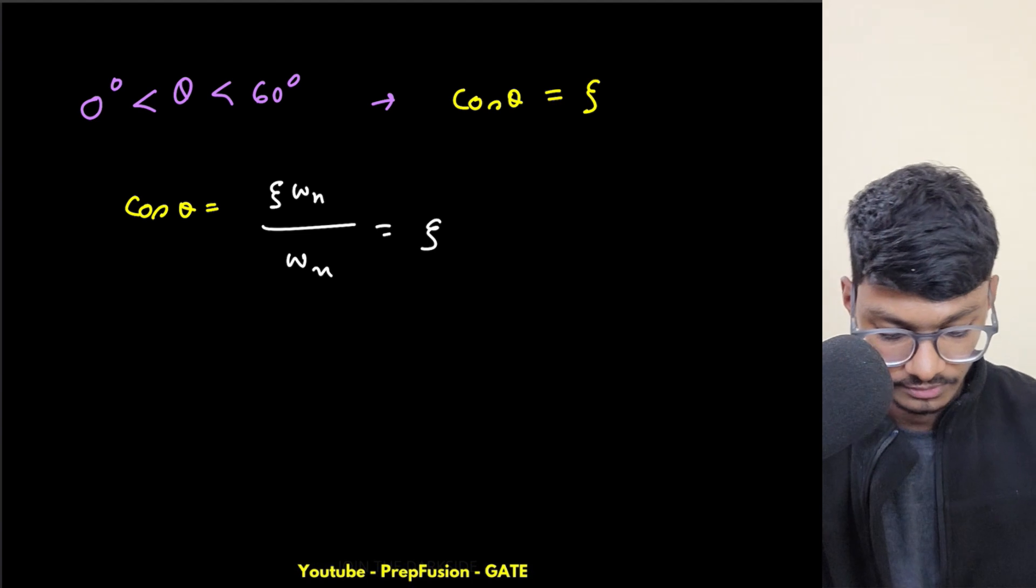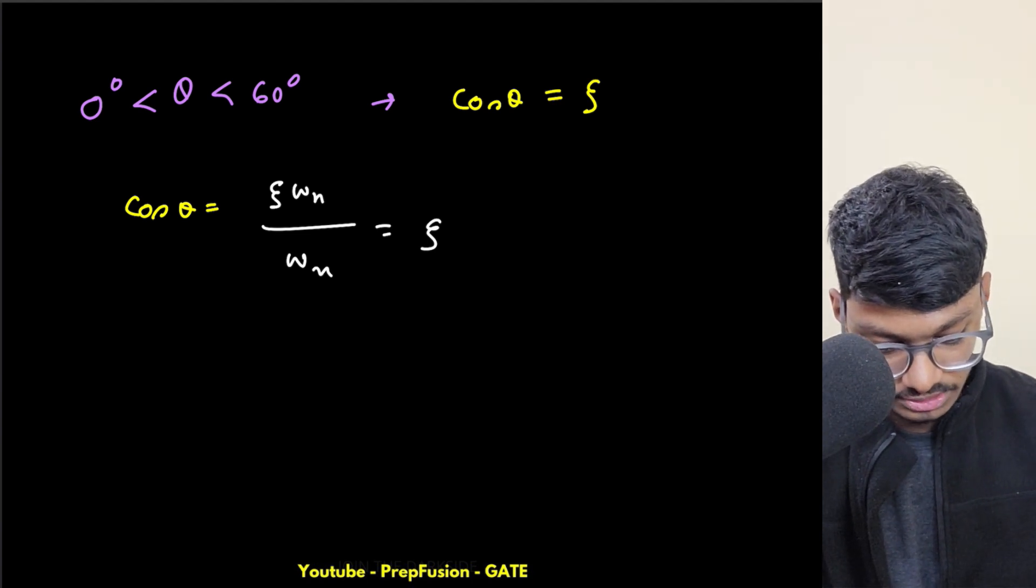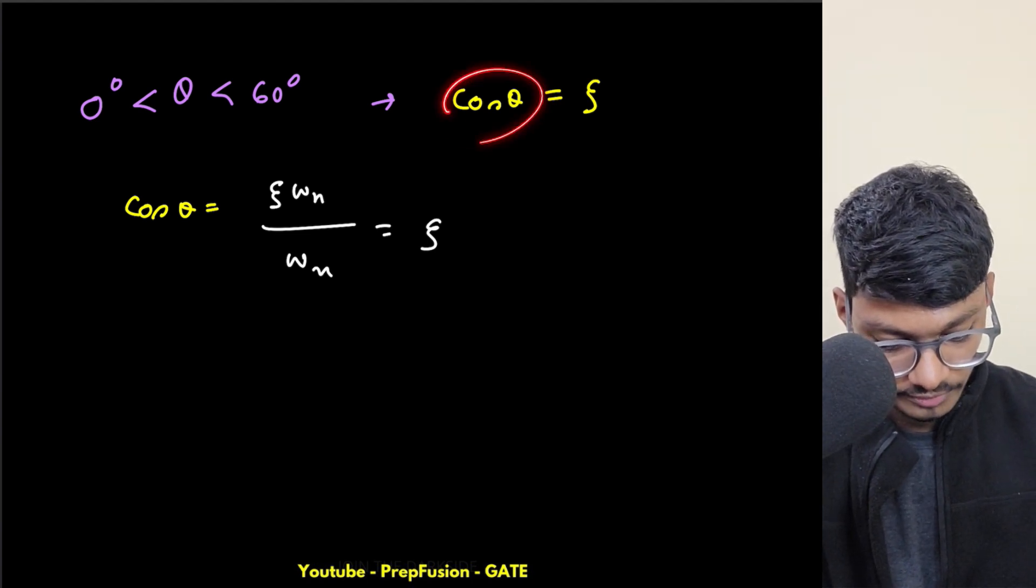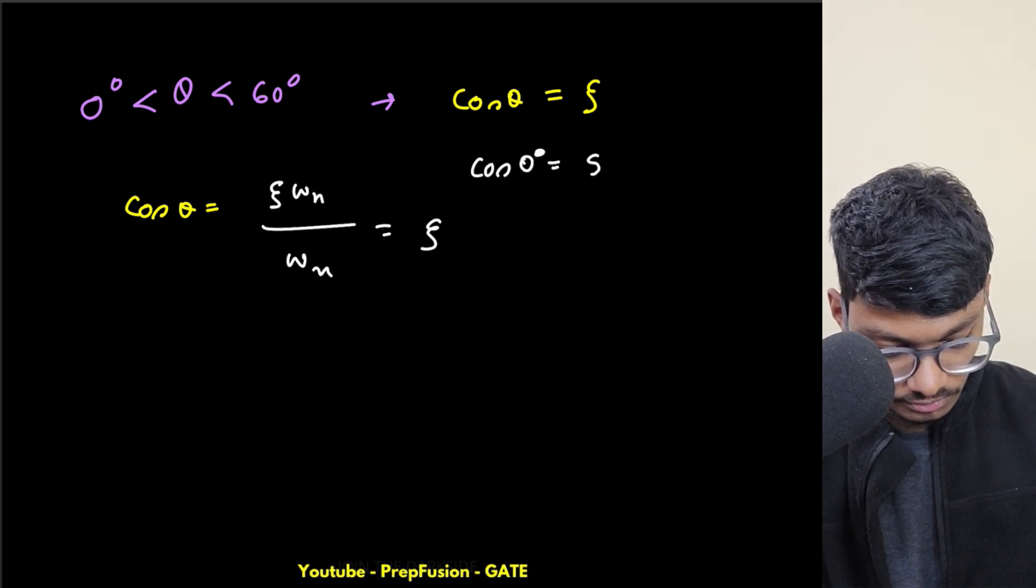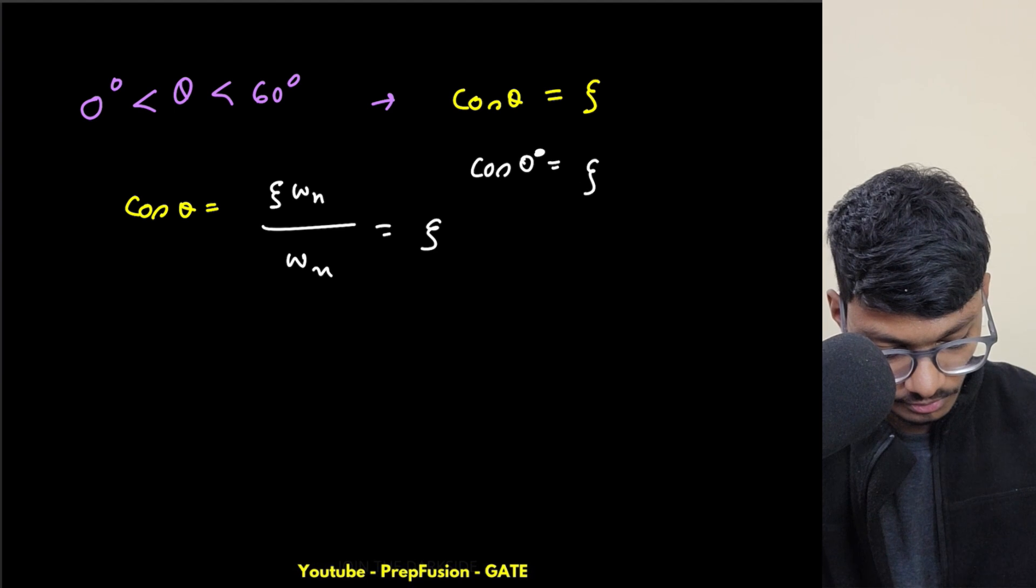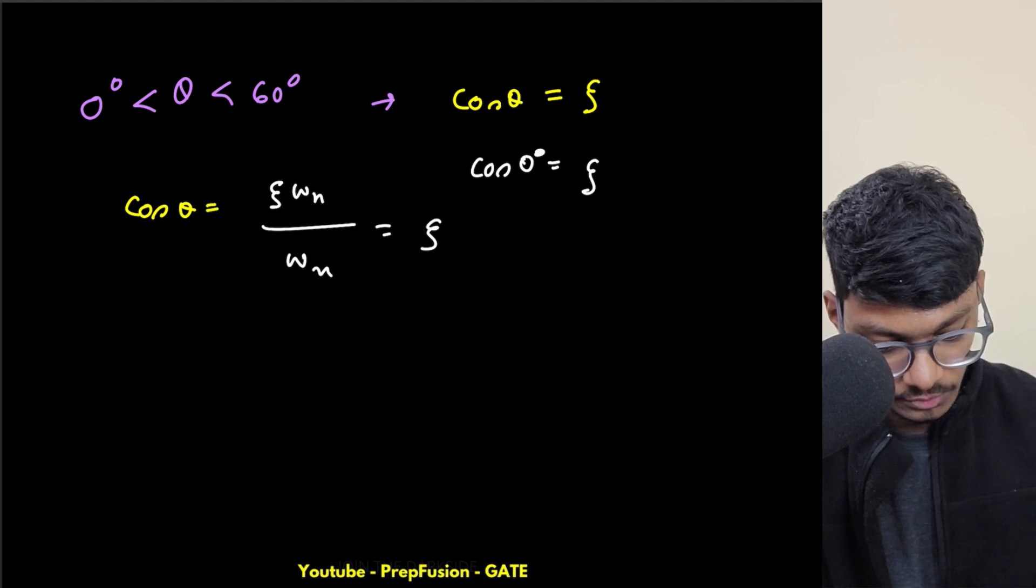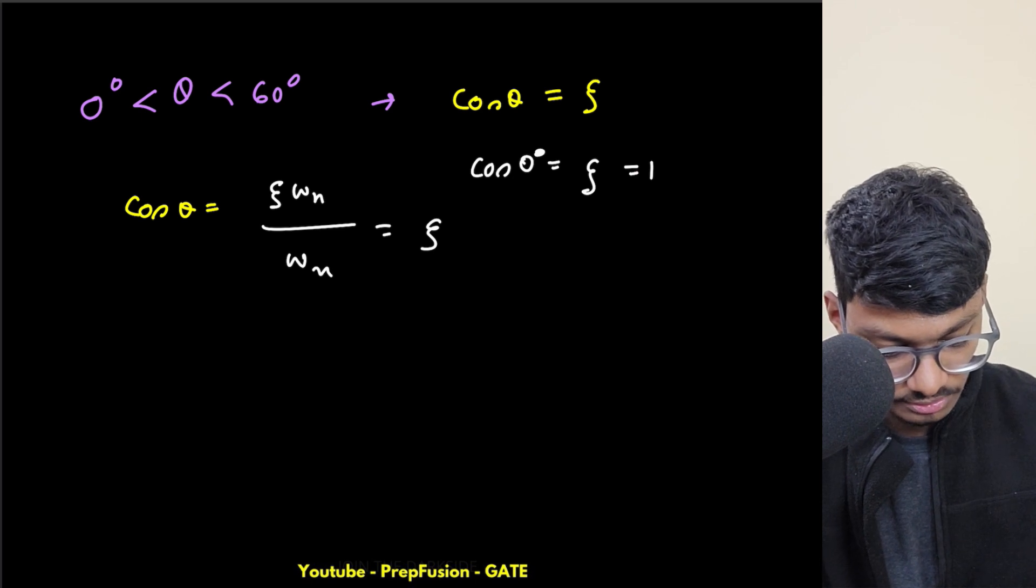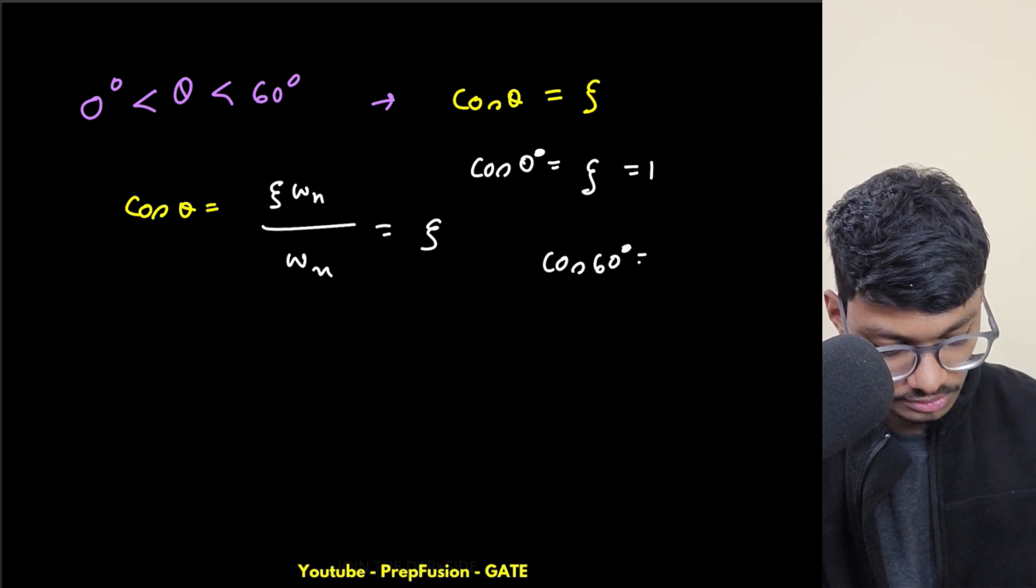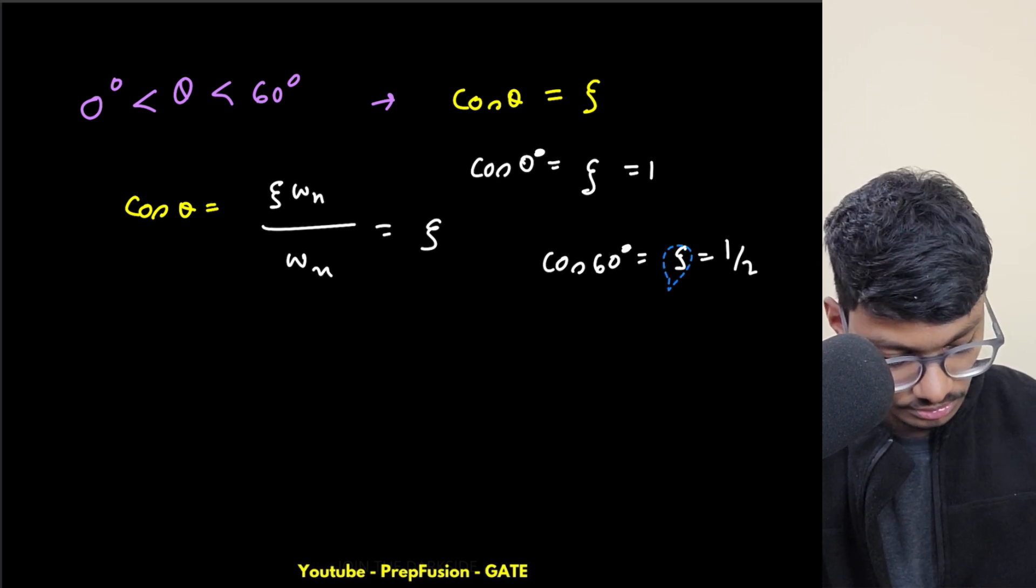So here as my theta is varying from 0 to 60 degrees, how will my zeta vary? If I put cos 0 here, cos 0 equals 1 itself. Now if I put cos 60 over here, cos 60 equals half.